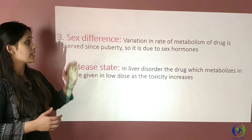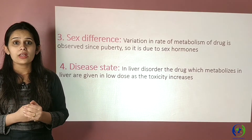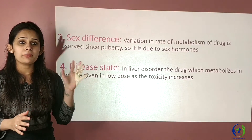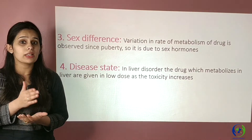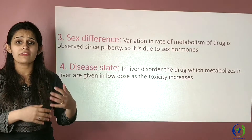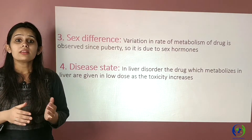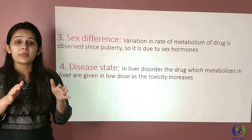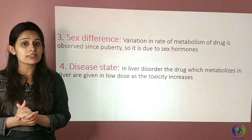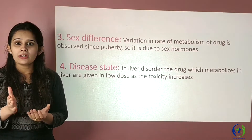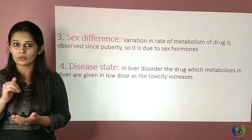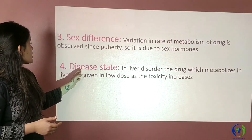The next factor is sex. Till puberty, the rate of metabolism in both males and females is equal. But after puberty, the rate changes due to the role of sex hormones. Hormones developed after puberty vary the rate of metabolism in males and females. Additionally, females taking oral contraceptive pills have a slightly lower rate of metabolism of every drug compared to females who are not on OC pills.